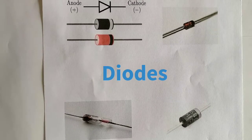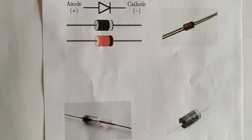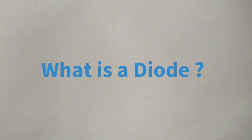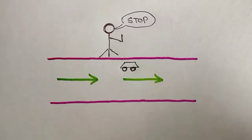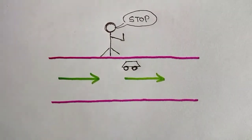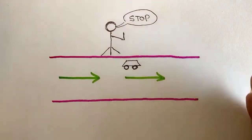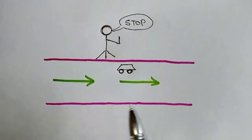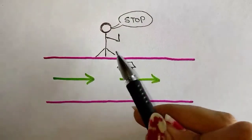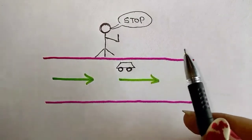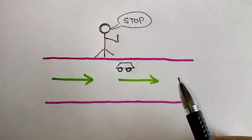In this video, we are going to discuss about diodes. A diode is a semiconductor device with two terminals, typically allowing the flow of electrons only in one direction. Consider a one-way road wherein the traffic is allowed only in one direction, and the policeman is acting as the depletion region, which obstructs the flow of traffic in the opposite direction.